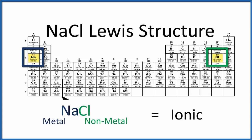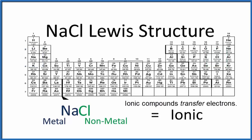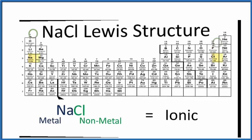Ionic compounds transfer electrons when they form chemical bonds. We also need to know that sodium is in group 1 or 1A and it has one valence electron. Chlorine in group 17 or 7A has seven valence electrons.